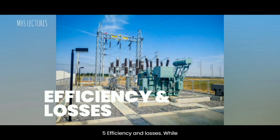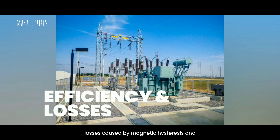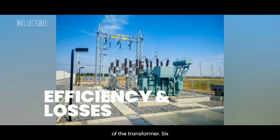Efficiency and Losses: While transformers are highly efficient devices, they still experience some losses during operation. The losses include copper losses, due to resistance in the windings, and core losses, caused by magnetic hysteresis and eddy currents. These losses result in a slight reduction in the efficiency of the transformer.